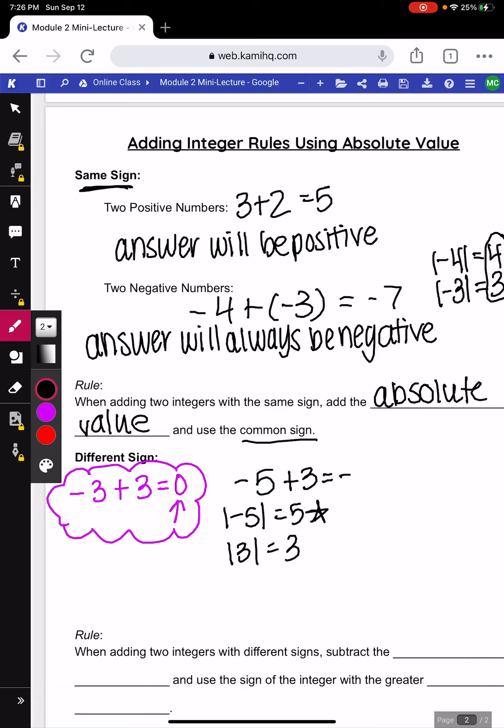Now, above we added our absolute values. Here, you're going to subtract them. 5 minus 3 we know is 2. We already had the negative, so my answer is negative 2.